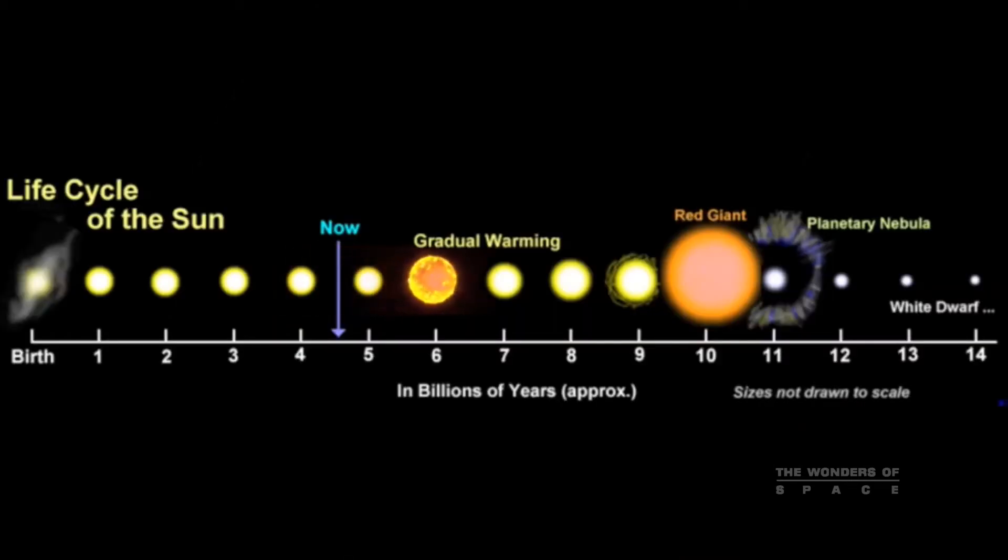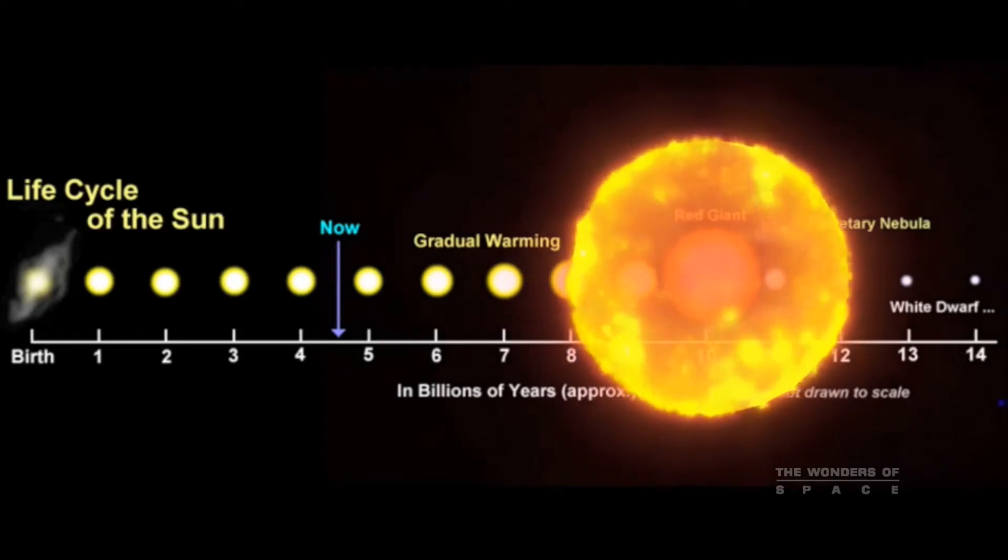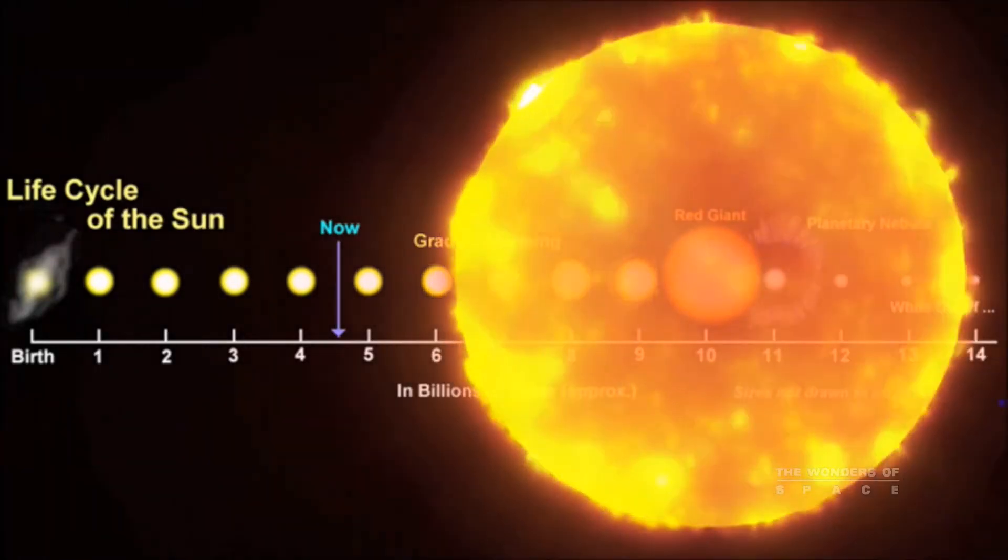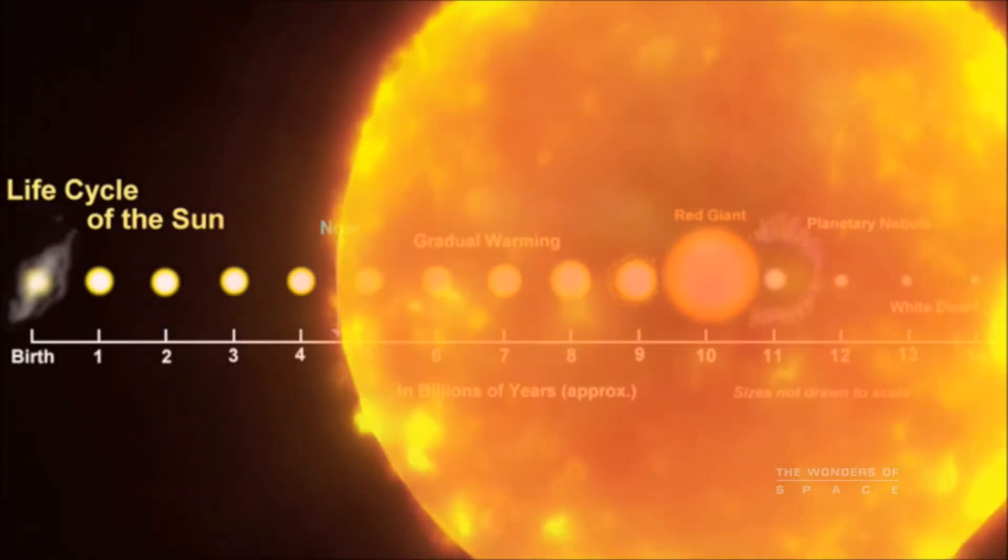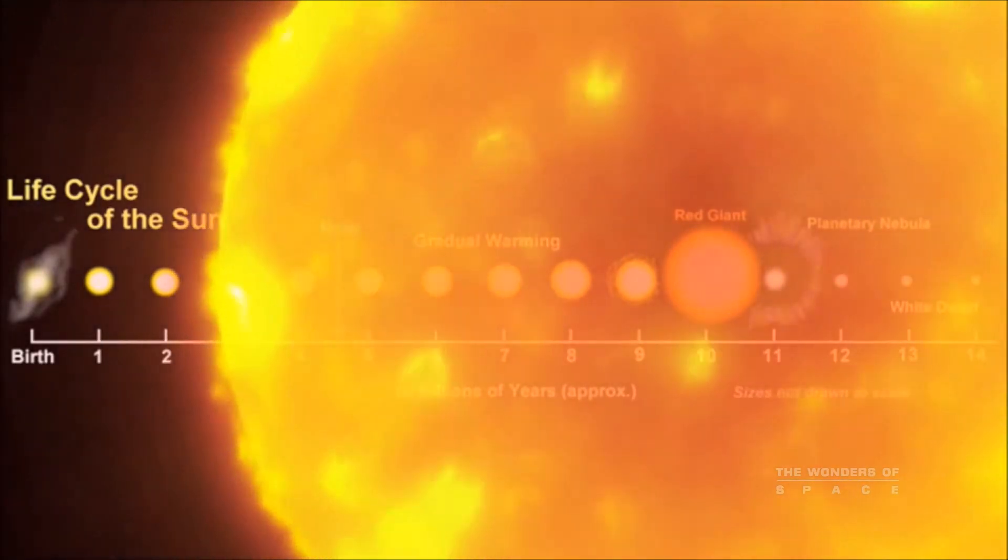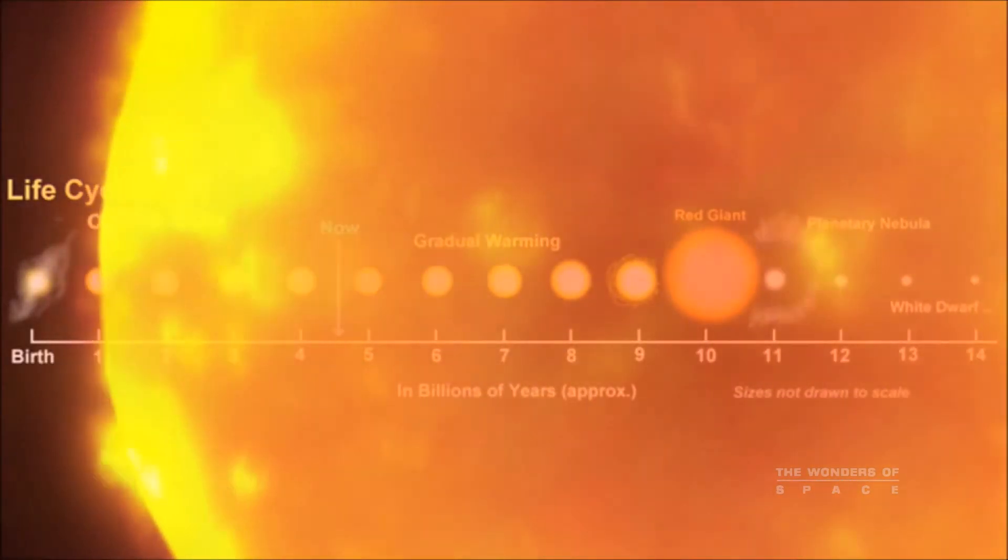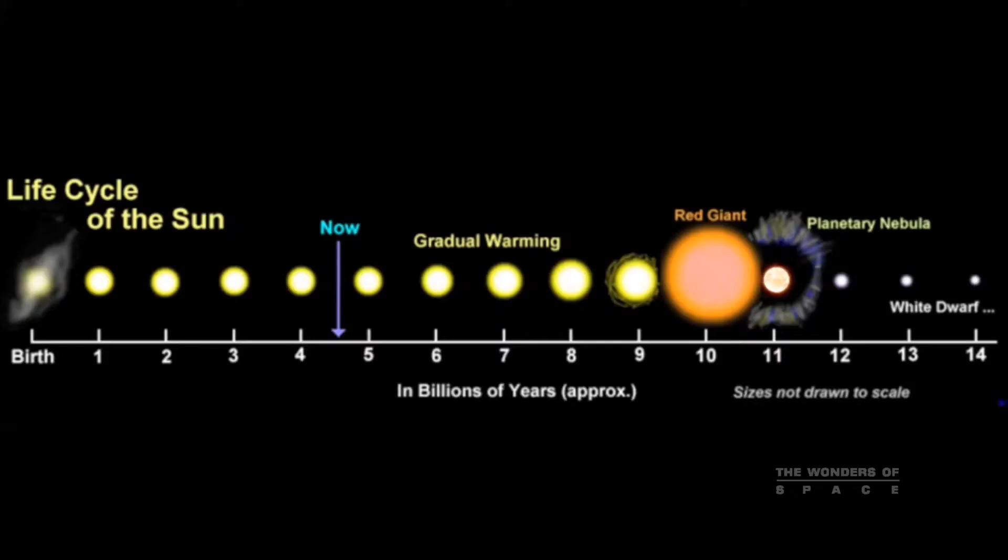The Sun will be fairly stable over the next 5 billion years, at which time it will enter its red giant phase. It will expand enormously so that its outer layers will reach the current orbit of Earth, giving it a diameter of almost 200 million miles. After that, it will live a few billion more years as a white dwarf.